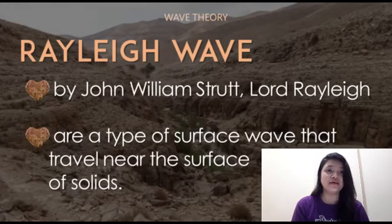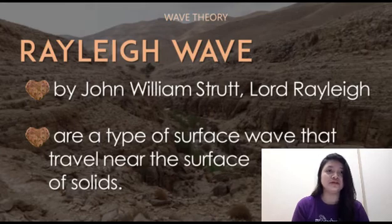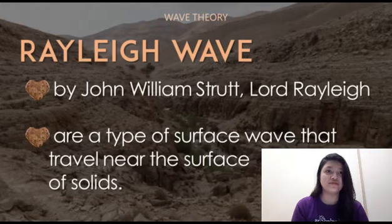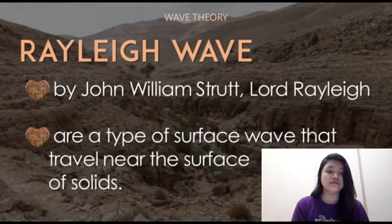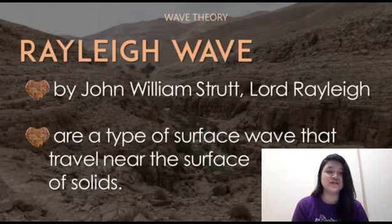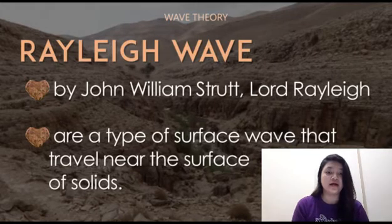The Rayleigh wave is the other kind of surface wave. It is named for John William Strutt, Lord Rayleigh, who mathematically predicted the existence of this kind of wave in 1885. A Rayleigh wave rolls along the ground just like a wave rolls across a lake or an ocean. Because it rolls, it moves the ground up and down and side to side in the same direction that the wave is moving. Most of the shaking felt from an earthquake is due to the Rayleigh wave, which can be much larger than the other waves.